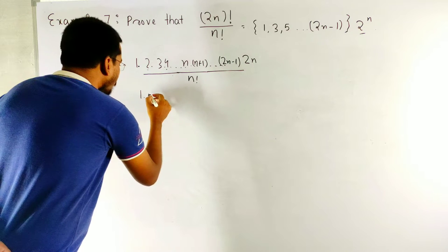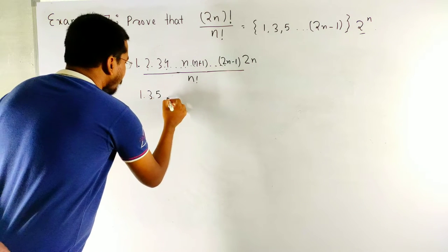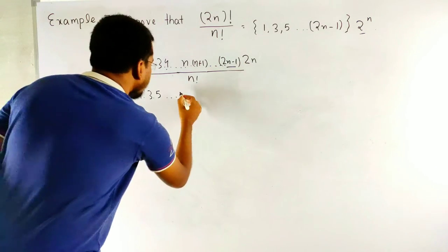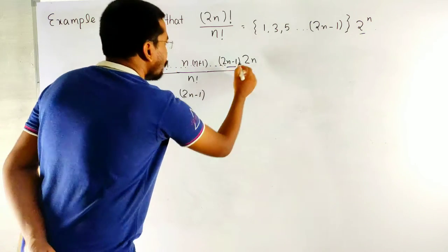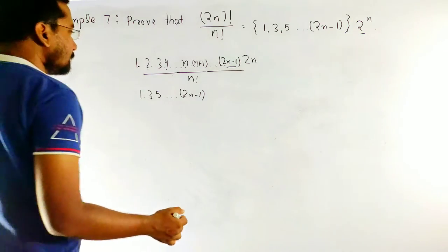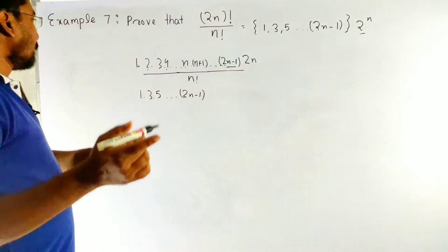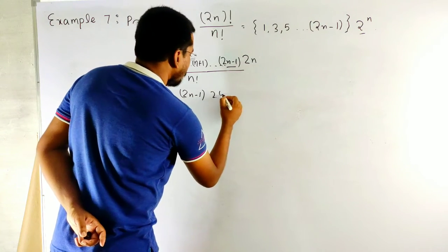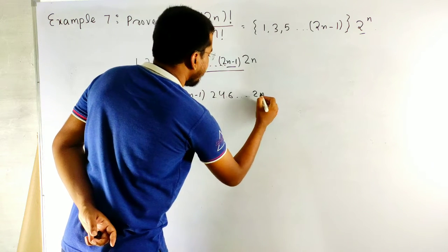Let's separate it 1 and 3, 5 up to 2n minus 1. 2n minus 1. 2n is even number as you know. And now, take even number that 2, 4, 6 up to 2n.